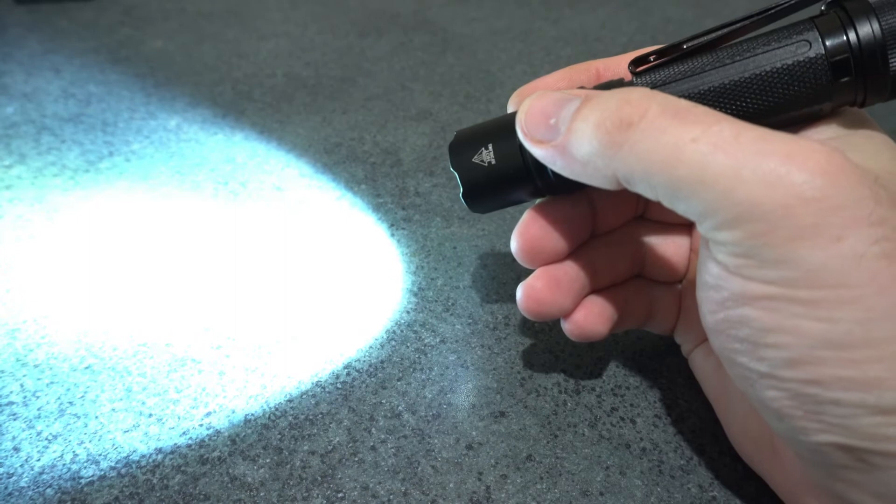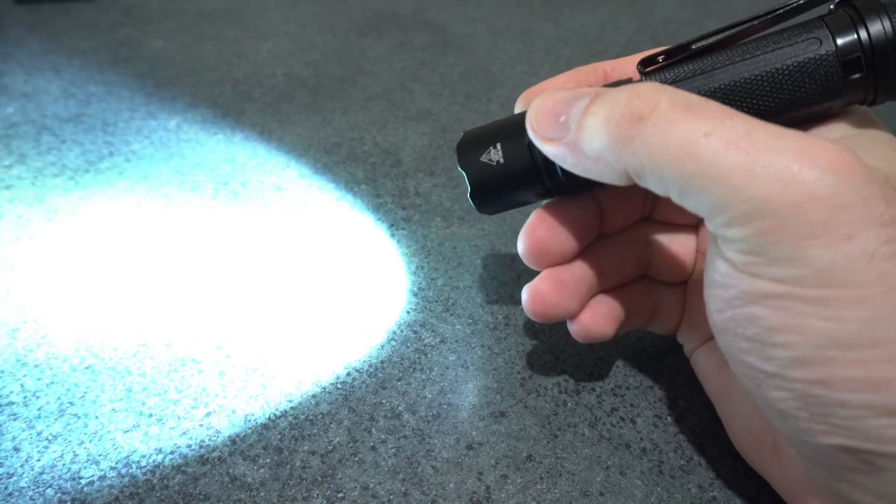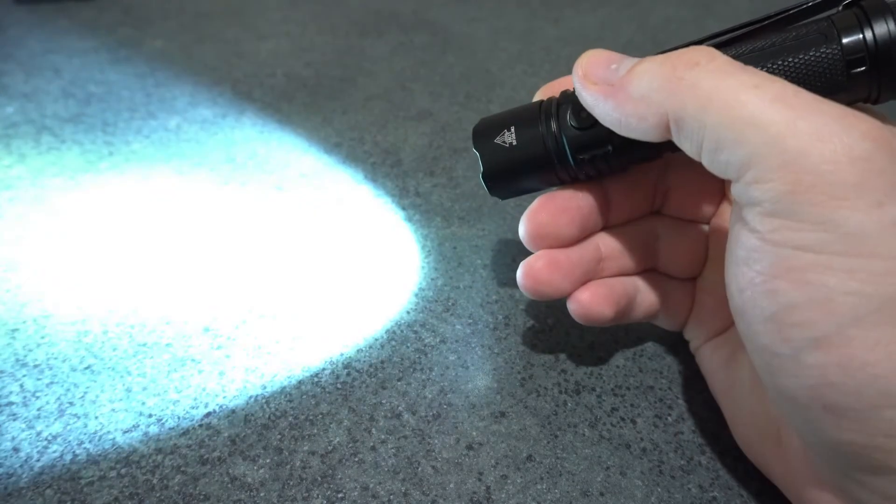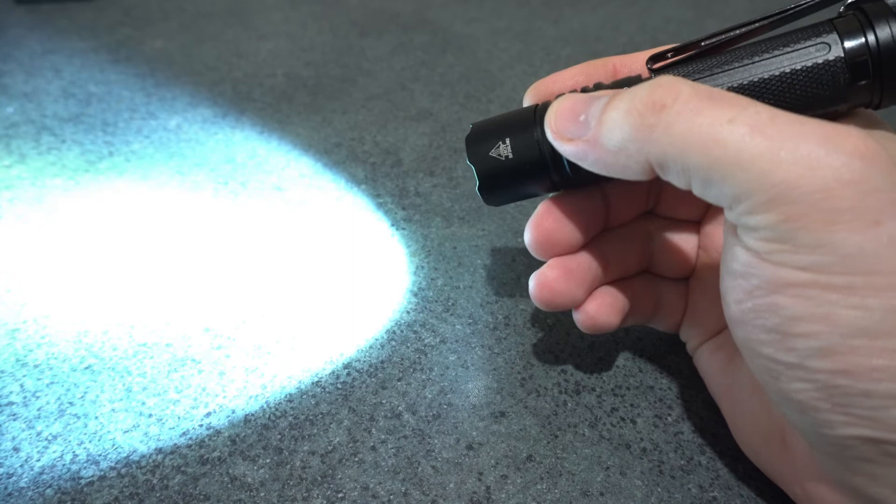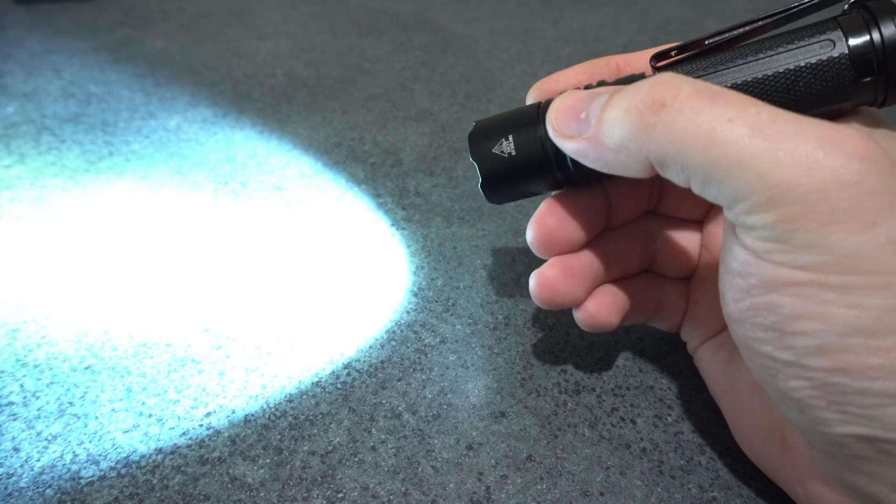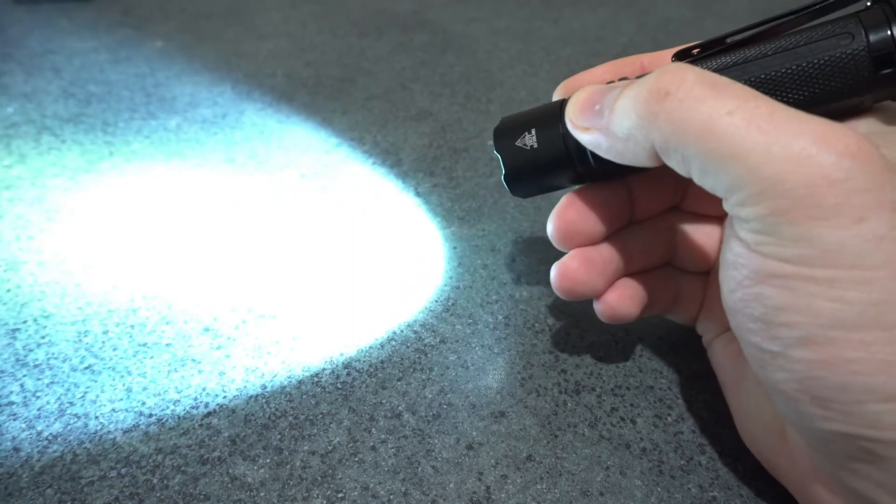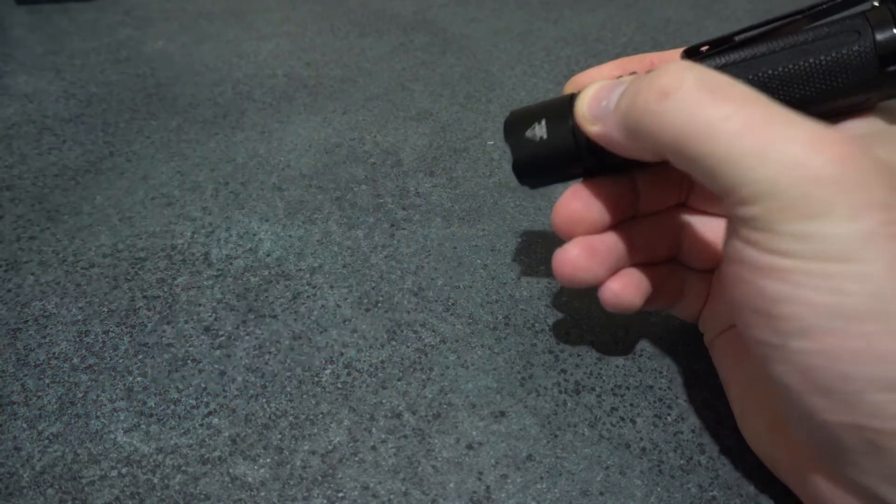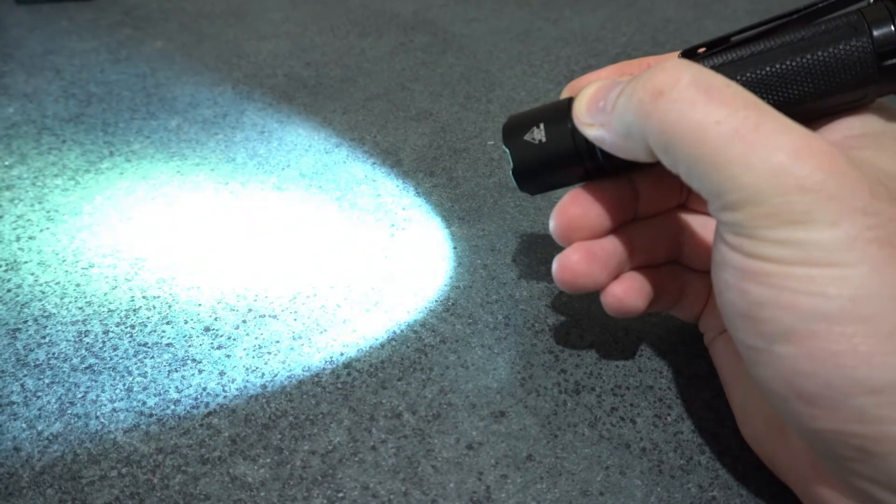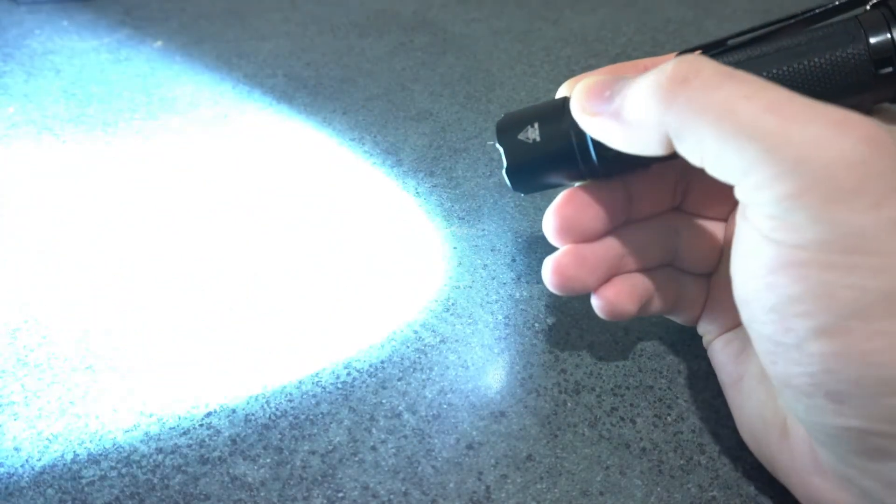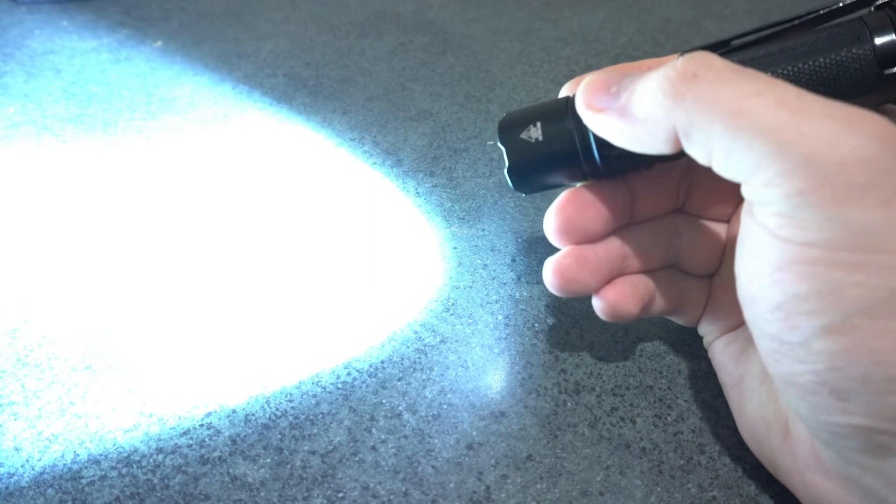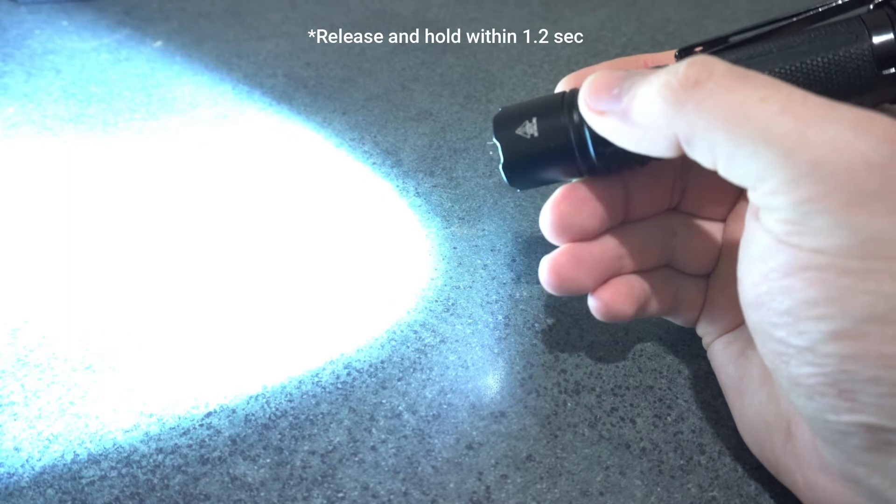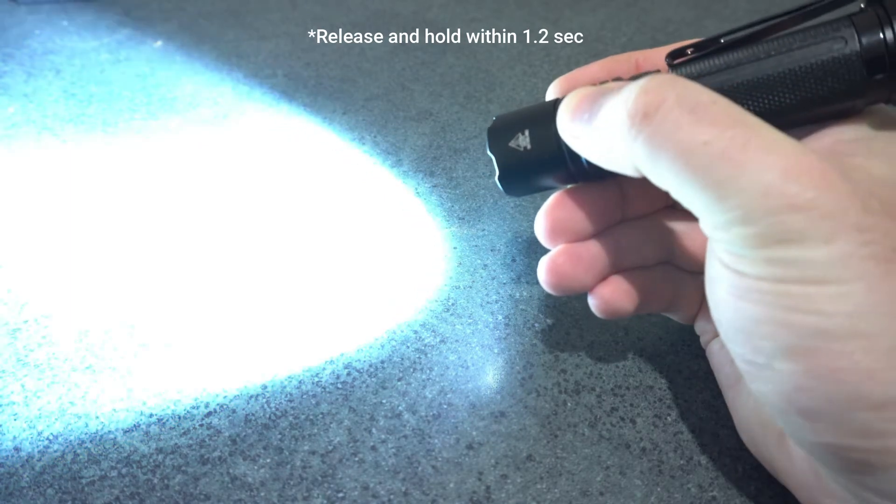While the light is on, you can click four times and it will switch over to the ramping mode group. And now, just the same, you just hold down the switch and it will increase or decrease the brightness from lowest to highest to lowest. And then if you want to not go all the way up and all the way down to be able to change direction, you just release the switch for 1.2 seconds and hold it again and it will change direction. So that's great.